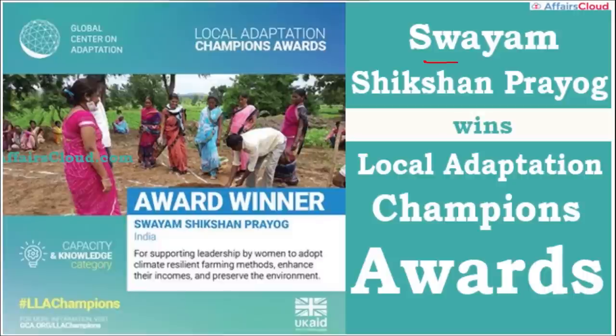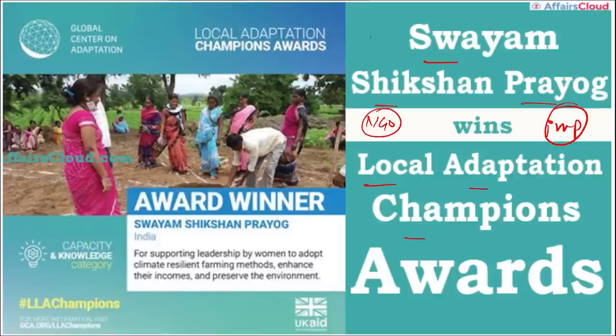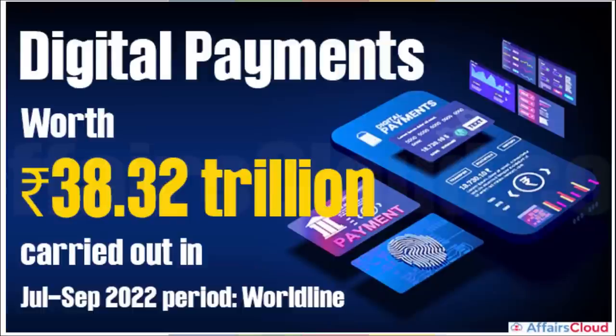Swam Sanchetna Prayog is a Maharashtra-based NGO that recently won the Local Adaptation Champions Award. This NGO supports women in adopting climate-resilient farming methods.